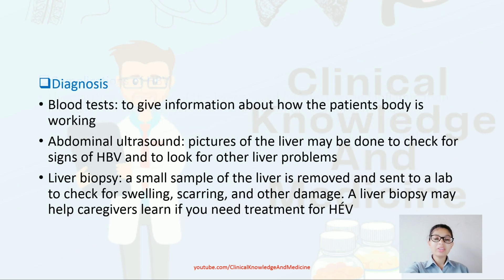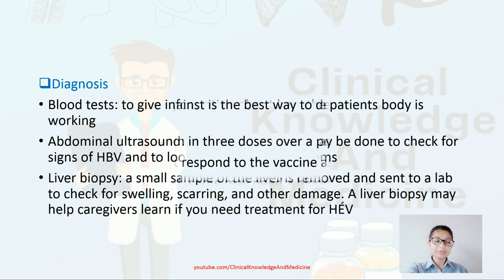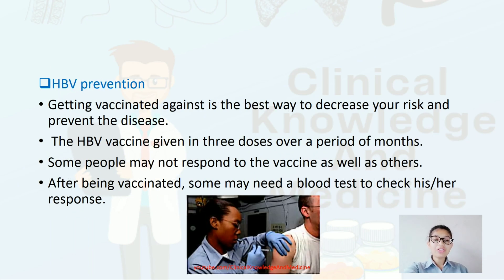Diagnosis of hepatitis B includes blood tests, abdominal ultrasound to check for signs of HBV and look for other liver problems, and liver biopsy where a small sample of the liver is removed and sent to a lab to check for scarring and other damage. Prevention: vaccination against HBV is the best way to decrease risk. The HBV vaccine is given in three doses over a period of months.